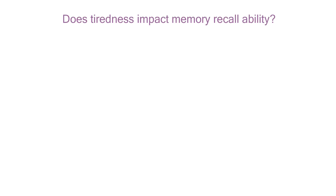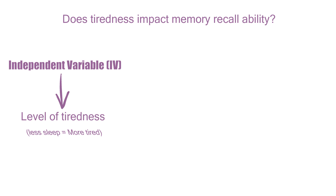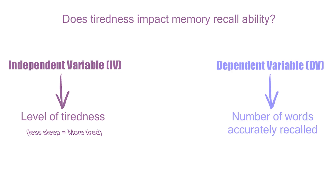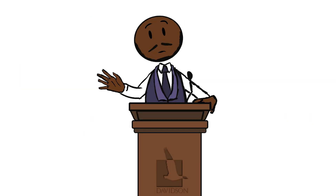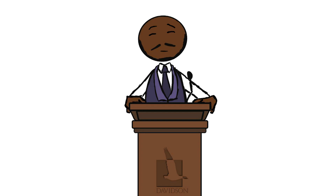For example, we want to identify the impact tiredness has on a person's ability to accurately recall a list of words. In this instance, the independent variable will be the level of tiredness of the participant, as we can adjust this by reducing the amount of sleep they have. The dependent variable will be the number of words accurately recalled, because the number of words recorded depends on how tired the person was. At first it can be a little tricky to identify which is which, but check out some experiments that should help you get your head around it.